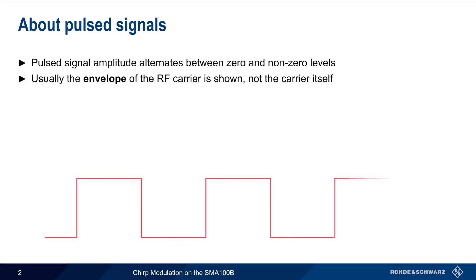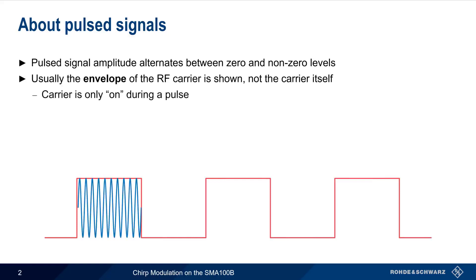Before we get started, it would be a good idea to review pulse signals. A pulse signal can be defined as a signal whose amplitude alternates between a zero and a non-zero level. It is important to keep in mind that when we look at diagrams like this, what we are really looking at is the envelope of an RF carrier that is being switched on and off.